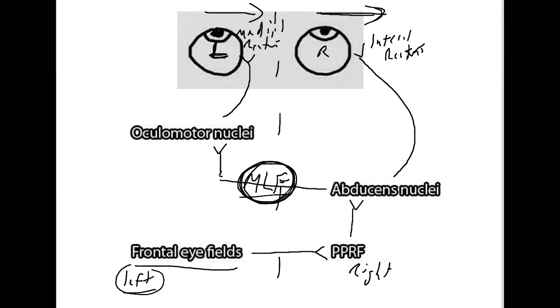Now, if the MLF is damaged, as it is sometimes in multiple sclerosis, what happens is that this part of the circuitry, from the frontal eye fields to the PPRF, back to the abducens nuclei, is intact. So, if somebody with multiple sclerosis with damage to their MLF is trying to look to the right, their right eye can look to the right, because this part of the pathway, this first part of the pathway, is still working.